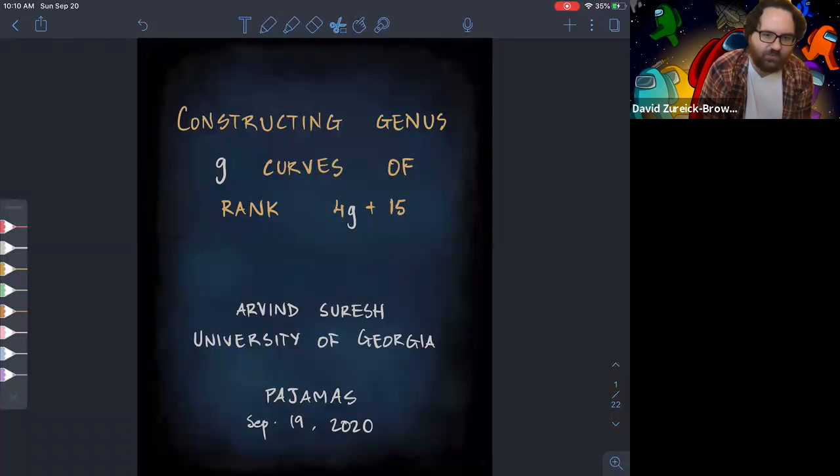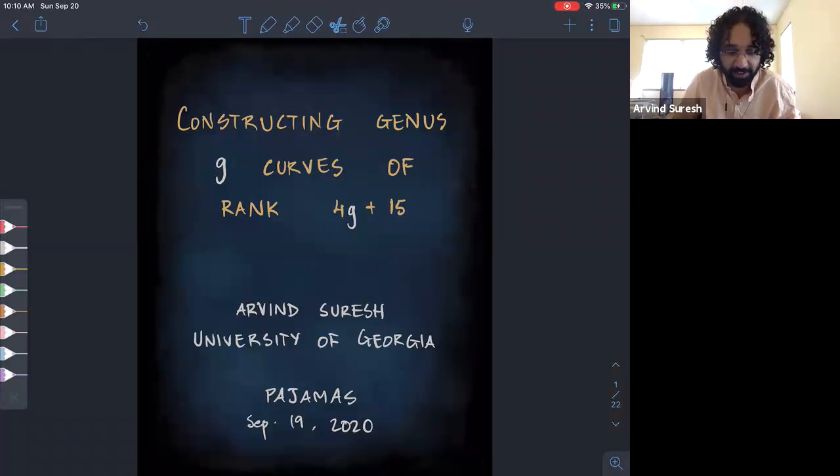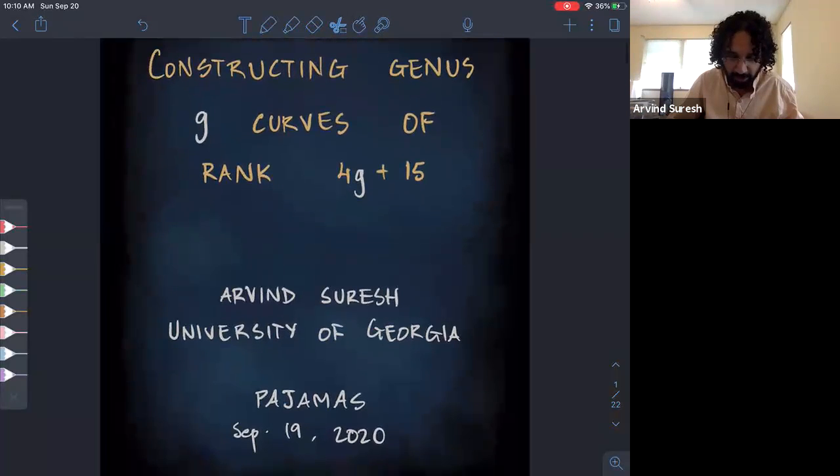Arvind Suresh from University of Georgia will be talking about constructing genus G curves of rank 4G plus 15. Thank you so much, first of all to the organizers for organizing this. It's been great so far and thank you for the opportunity to speak here. Very excited. So let me jump right in.